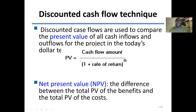Discounted cash flow techniques are used to compare the present value of all cash inflows and outflows for the project in today's dollar terms. The present value (PV) is the cash flow amount divided by (1 + rate of return) to the power N, where N is the number of years or the period. The net present value (NPV) is the difference between the total present value of the benefits and the total present value of the costs.